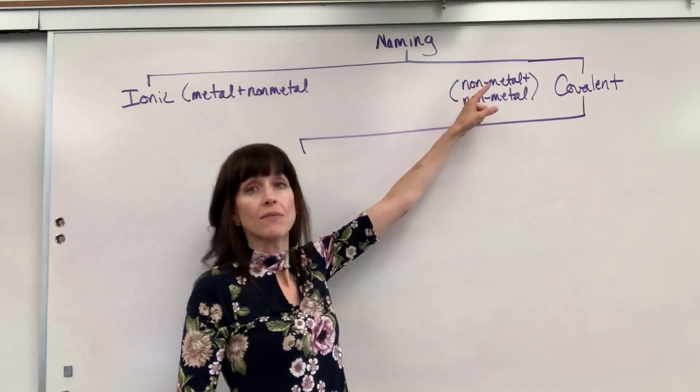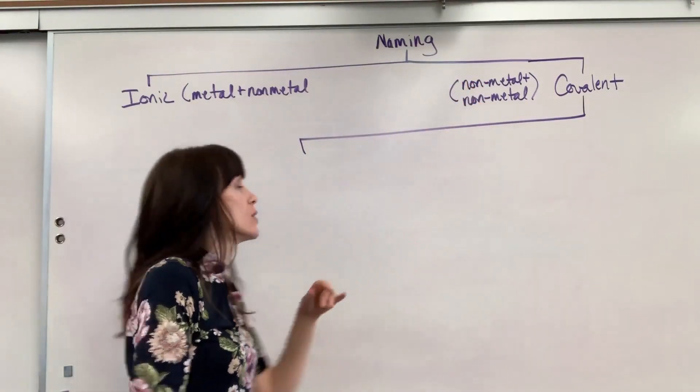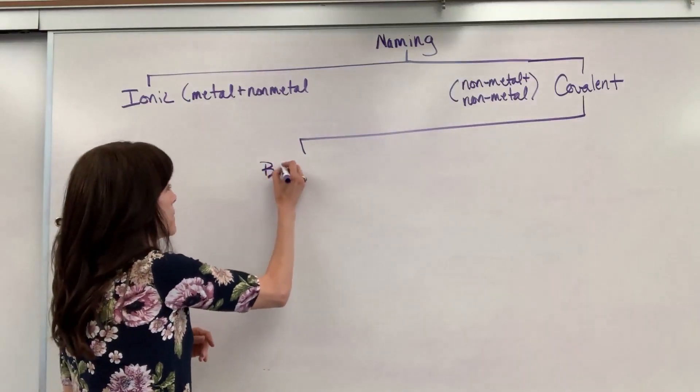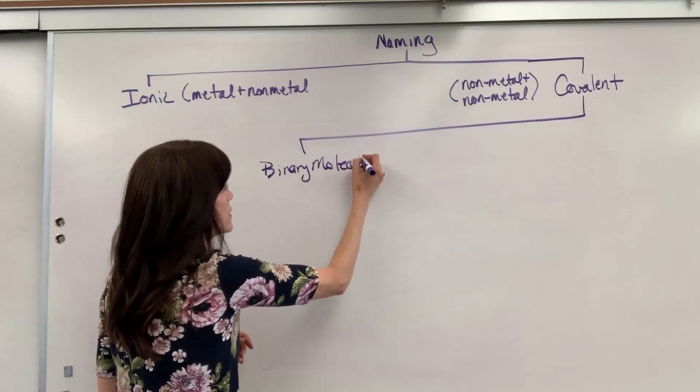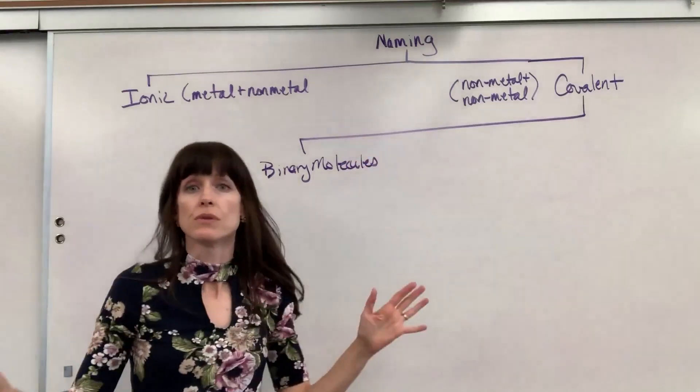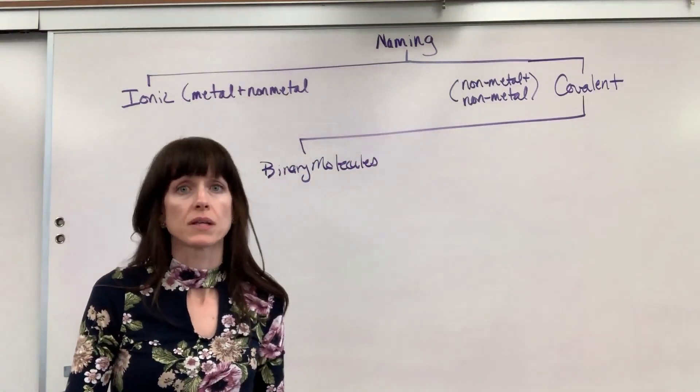Covalent. This is when we have a non-metal and a non-metal come together. We have what are called binary molecules. This is when you have just two non-metals that come together.